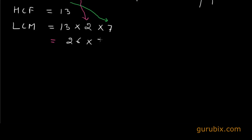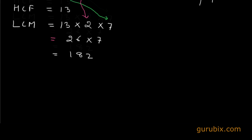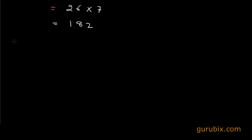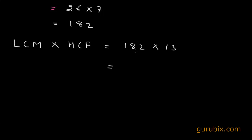Now we find the LCM: 26 multiplied by 7 gives 182. To verify as stated in the question, we find the product of LCM and HCF: 182 multiplied by 13 gives 2366.